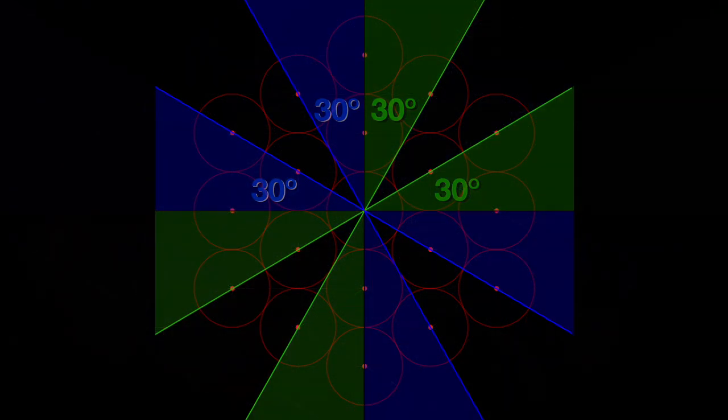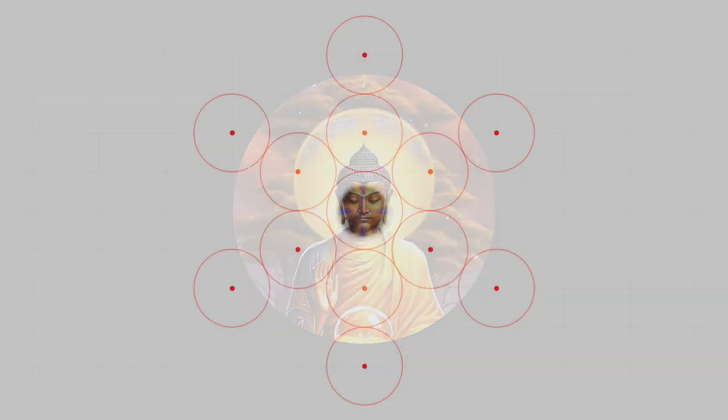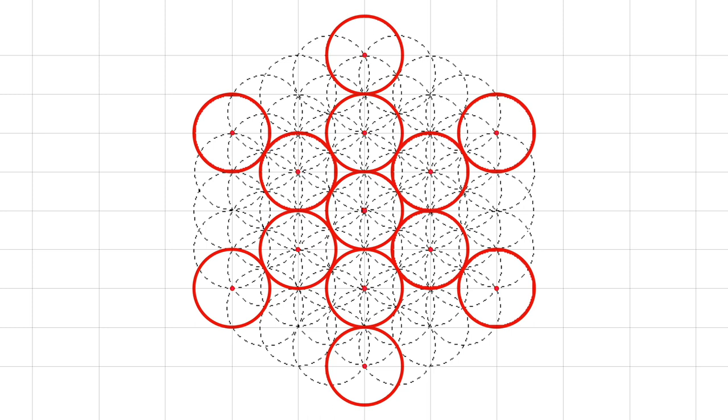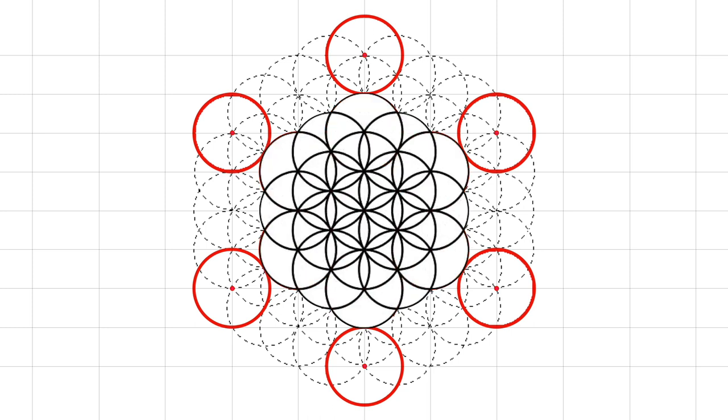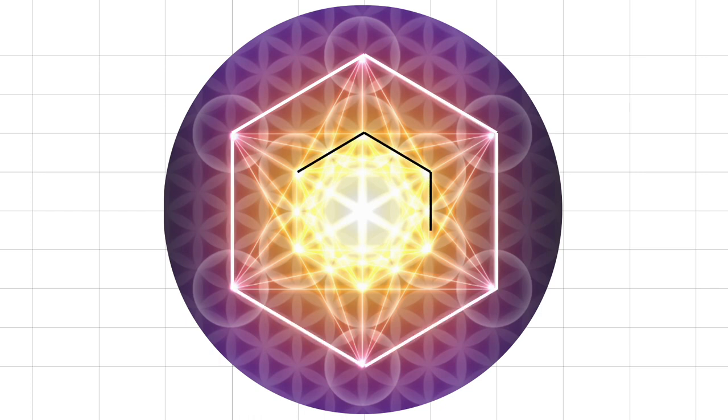It ever whispers to us through symbols and the eternal building blocks of perfect measure, prime numbers. It hides its timeless mystery within every flower of every life that blossoms from the blueprint known as Archangel Metatron's Cube.